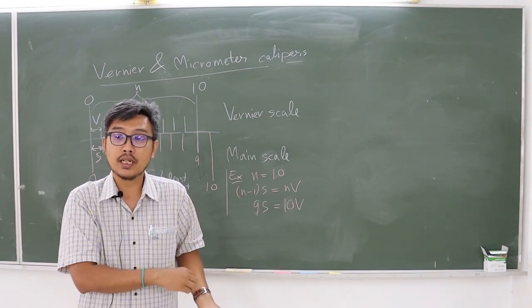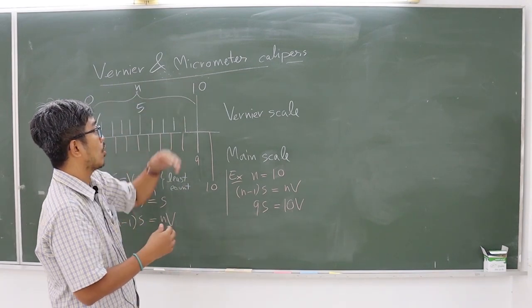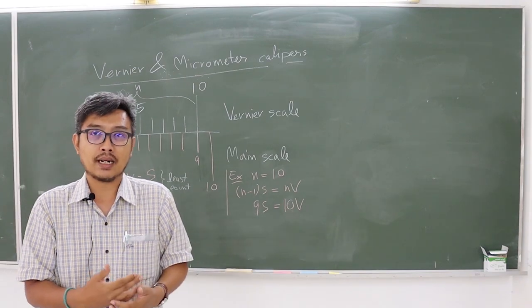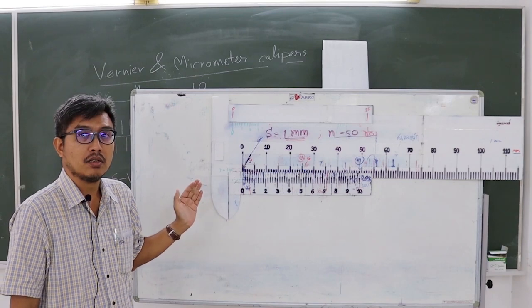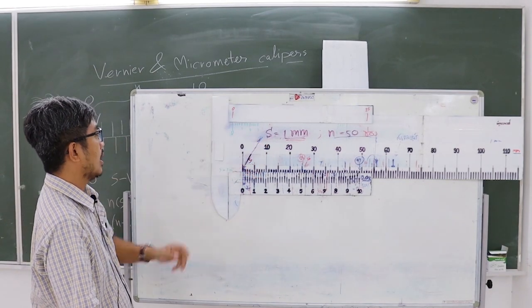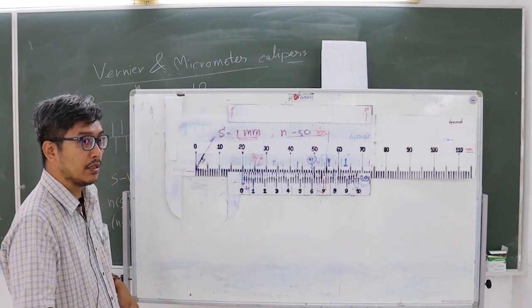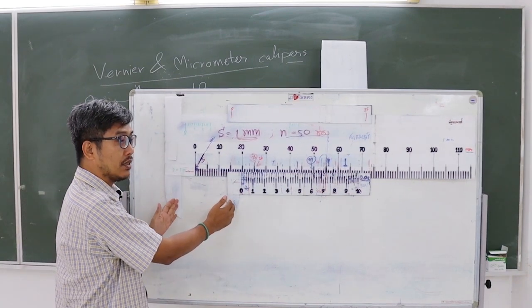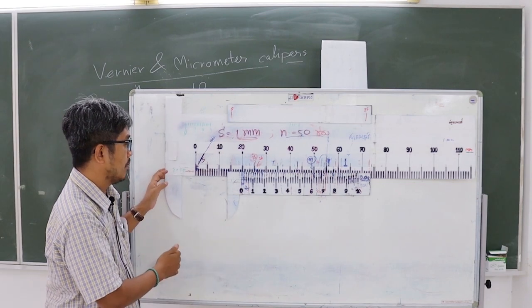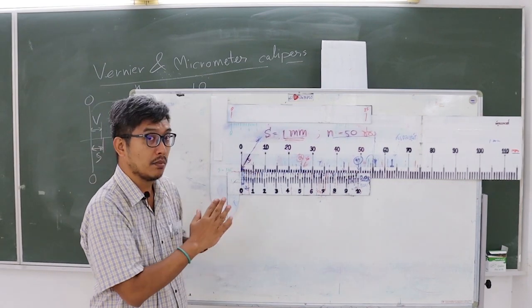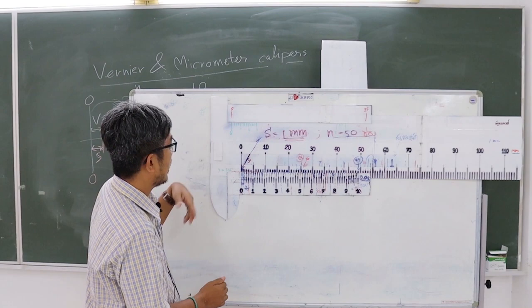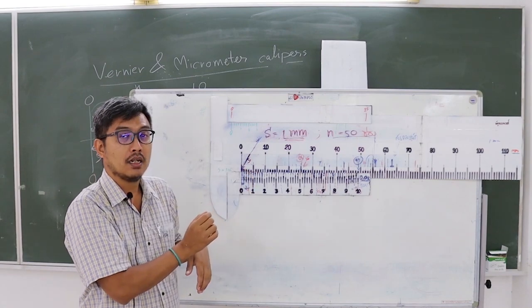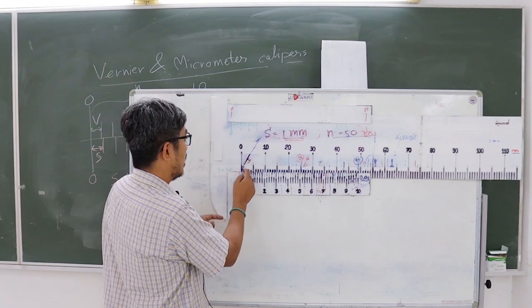Now we will learn how to use and read the vernier scale and the advanced instrument, the micrometer caliper. This example uses a vernier meter caliper. The calipers are the parts used to measure the object. The instrument consists of two main parts: the main scale on top and the vernier scale on the bottom. In the main scale part, the small division is the length of main scale S, which is 1 mm in this case.